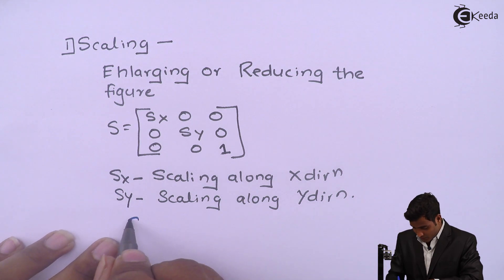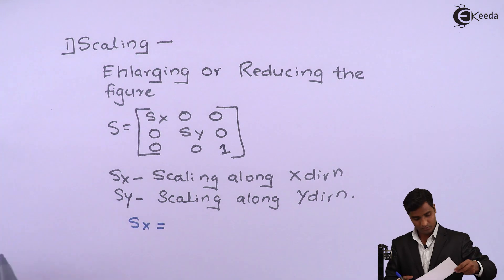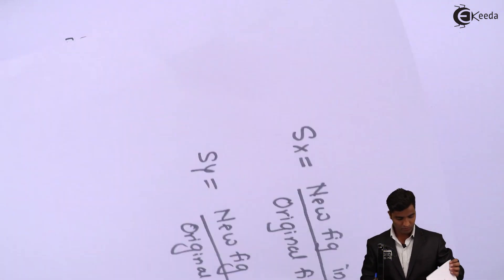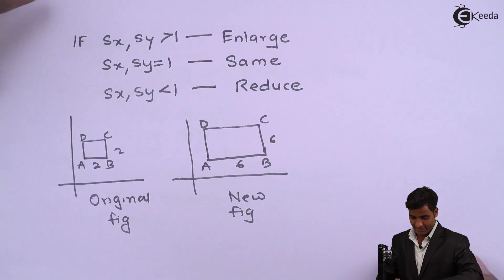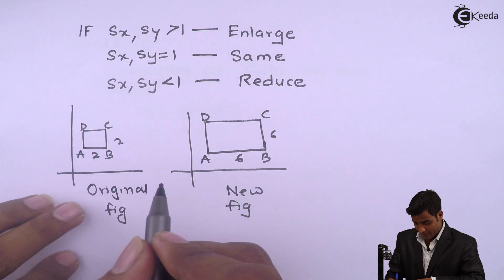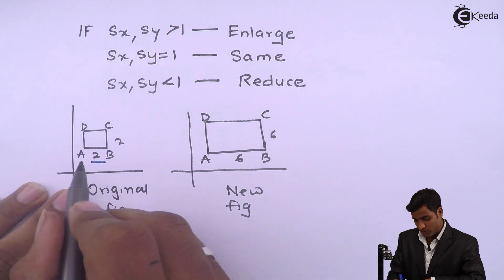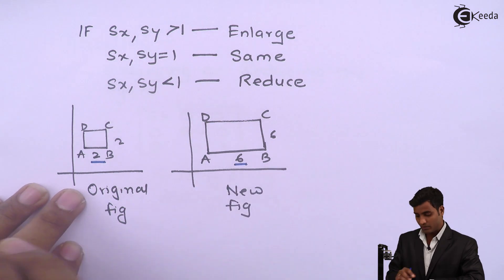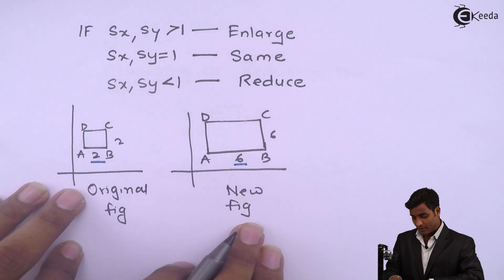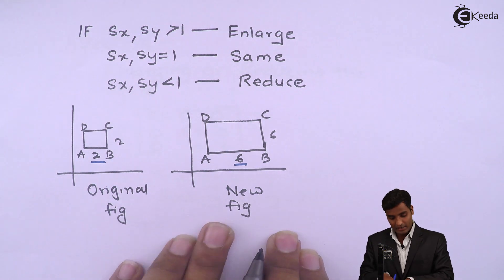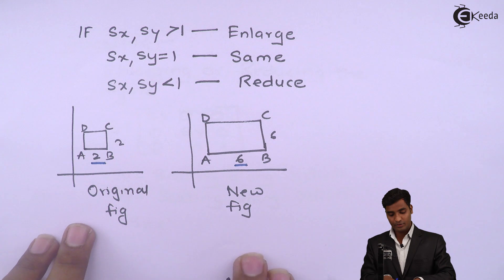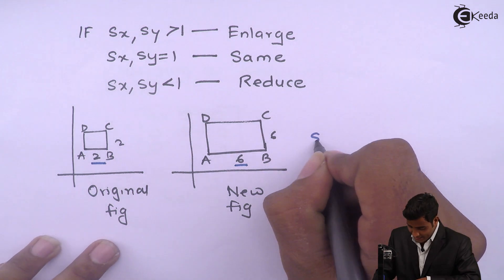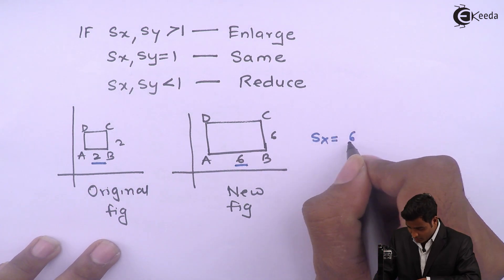Scaling is Sx equal to, we took this example where 2 which is scaling is done along x direction. This is 6 which scaling is done in x direction. But difference is that it is new figure and this one is original figure which means that Sx equal to 6 upon 2.